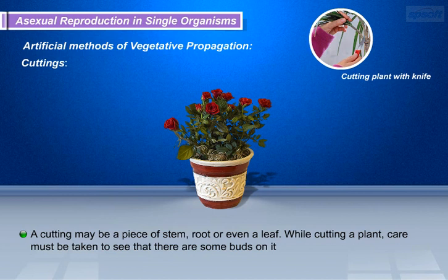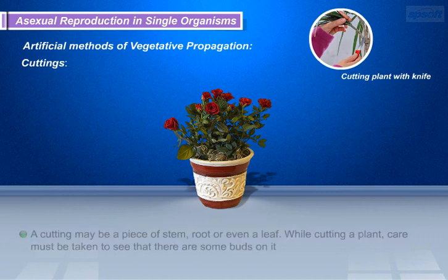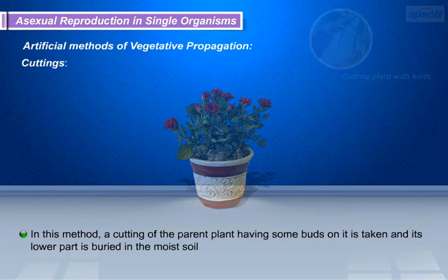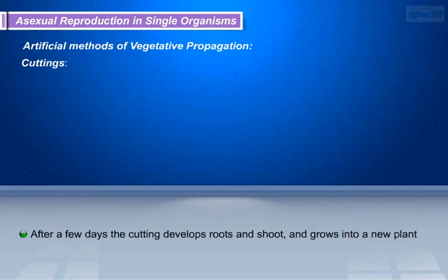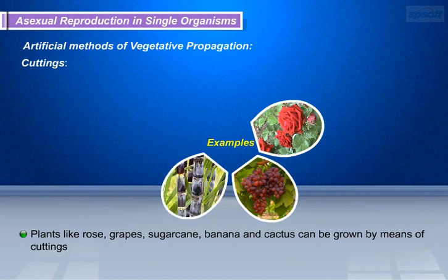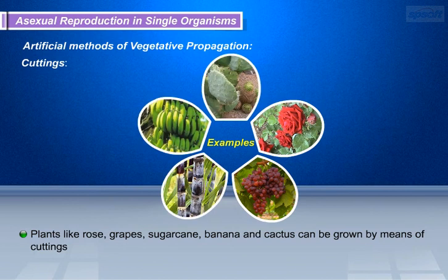A cutting may be a piece of stem, root, or even a leaf. While cutting a plant, care must be taken to see that there are some buds on it. In this method, a cutting of the parent plant having some buds on it is taken, and its lower part is buried in moist soil. After a few days the cutting develops roots and shoots, and grows into a new plant. Plants like rose, grapes, sugar cane, banana, and cactus can be grown by means of cuttings.